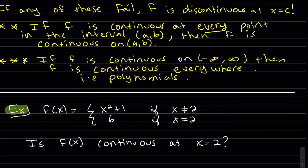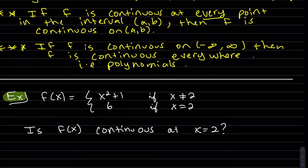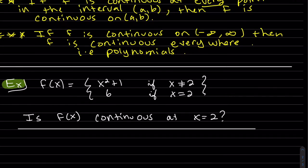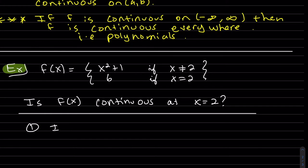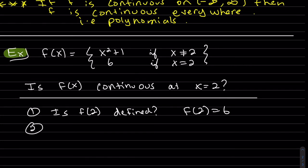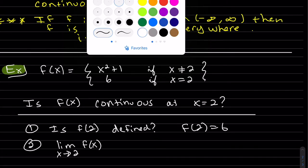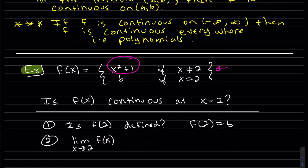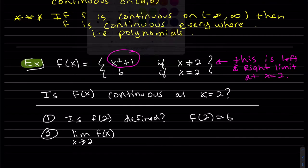Since this is a piecewise function, we want to ask: is the function continuous at 2, where it's split up? We're going to use the three-step process. Step one: is f of 2 defined? It certainly is — it says right here, if x equals 2, it's 6. So f of 2 equals 6. Now we want to find the limit as x approaches 2. With a piecewise, we want to find the left limit and the right limit. When we have a not-equal condition, that means this is the function defined to the right and to the left of 2.